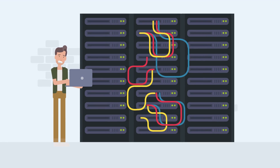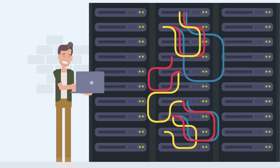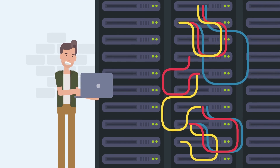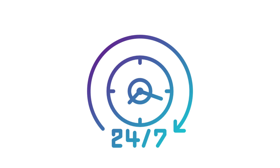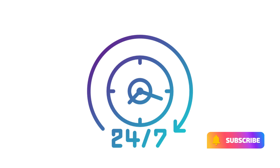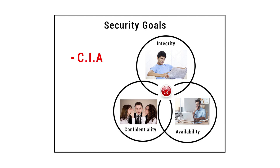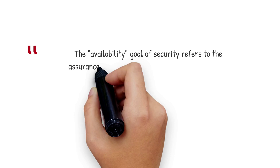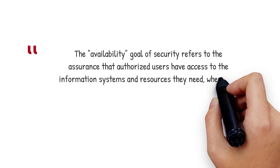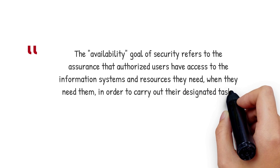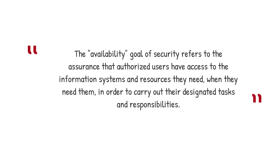Here we see a person standing in front of a server room holding a laptop with a serious look on their face. The third goal, availability, is one of the three main objectives of information security, along with confidentiality and integrity. It refers to the requirement for information systems and resources to be accessible and usable by authorized users when needed.